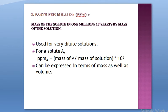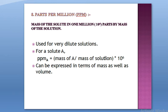The last concentration term is parts per million (ppm). It is used for very very dilute solutions where other concentration terms are not practical. It is defined as the mass of the solute in 1 million parts by mass of the solution. So ppm of a component A = (mass of A / mass of solution) × 10⁶. Multiplying by 10 raised to the power 6 gives parts per million.